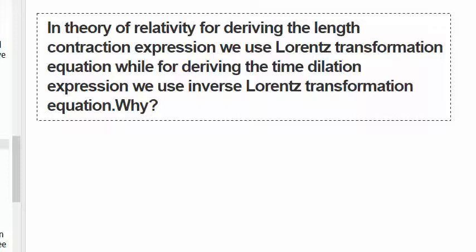In the theory of relativity, for deriving the length contraction expression we use the Lorentz transformation equation, while for deriving the time dilation expression we use the inverse Lorentz transformation equation. Why?